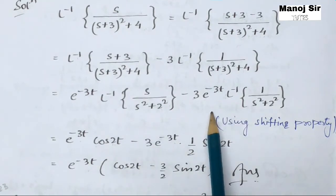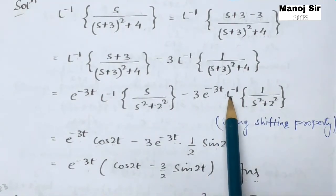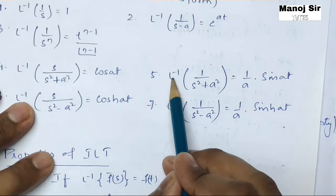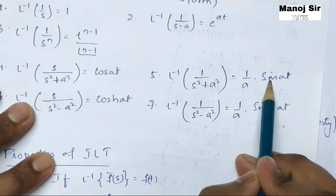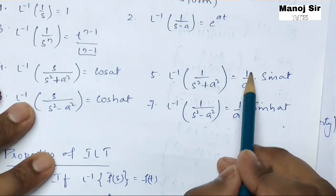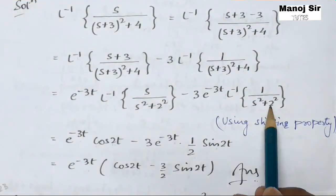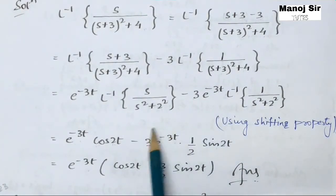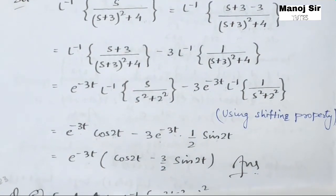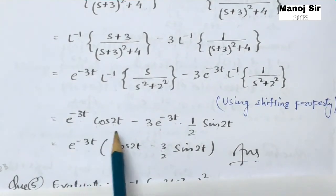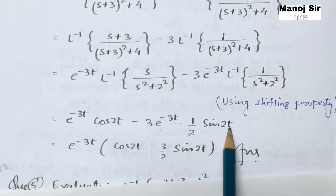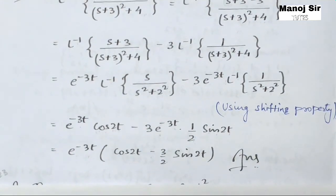For the second term, we use Formula 5: inverse Laplace transform of 1/(s² + a²) equals (1/a)·sin(at). With a = 2, the second term becomes −3 · e^(−3t) · (1/2) · sin(2t). Taking e^(−3t) common, the final answer is e^(−3t) [cos(2t) − (3/2)sin(2t)]. Thank you for watching this video.